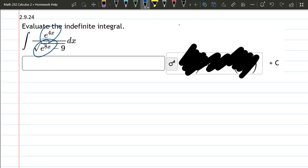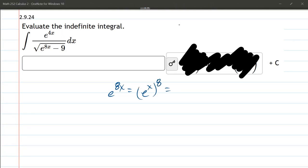So, let's look at this e to the 4x and e to the 8x. e to the 8x we can write a few different ways. We can write as e to the x to the 8th power, because powers of powers are products.